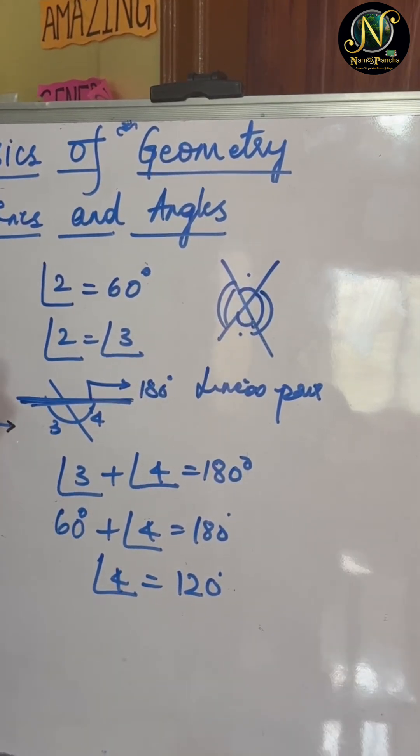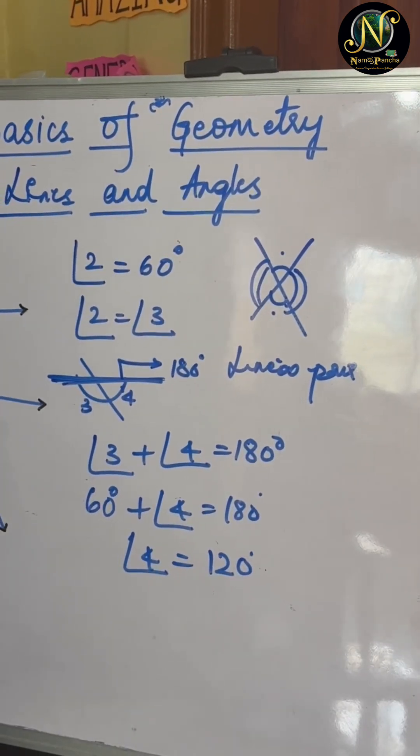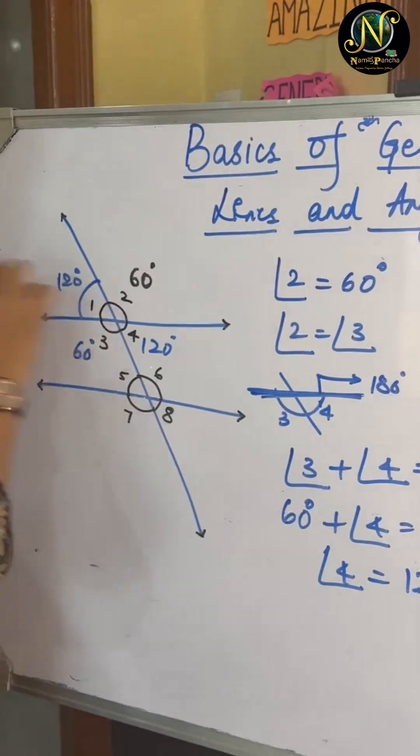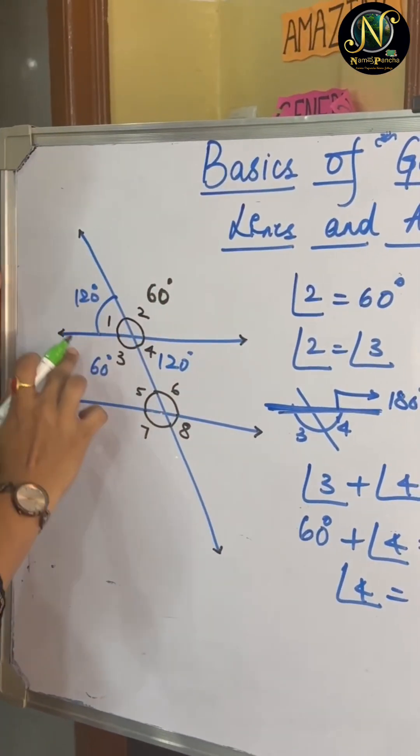Now this is 120. Again, by using vertically opposite angle, this also will be 120. So we found out all the four angles here.